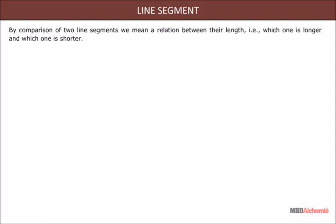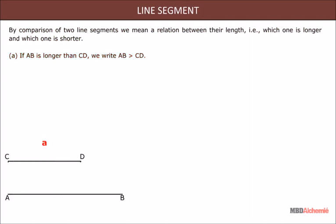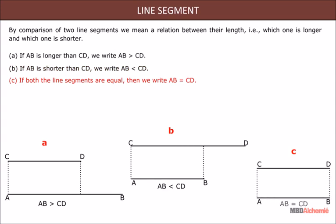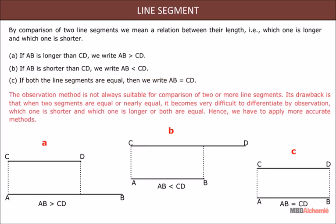In this concept we will learn about comparison of two line segments. By comparison of two line segments we mean a relation between their lengths — that is, which one is longer and which one is shorter. If AB is longer than CD, we write AB > CD. If AB is shorter than CD, we write AB < CD. If both line segments are equal, we write AB = CD.